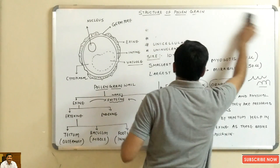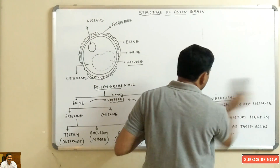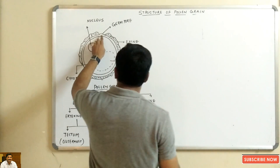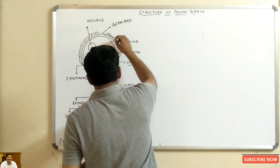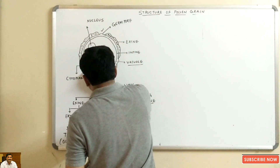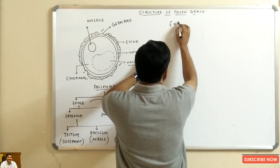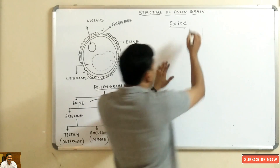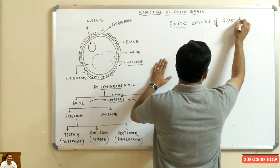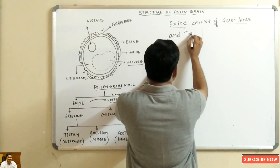There are germ pores in the exine layer. The exine layer is not continuous — as you can see in the diagram, the exine consists of germ pores at several places.